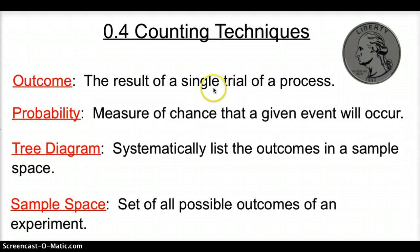The first vocab word is outcome, which is the result of a single trial of a process. So if we were flipping this coin, the outcome would be either a head or a tail. Then, probability is the measure of chance that a given event will occur. So the probability of this coin landing on heads would be 50%.